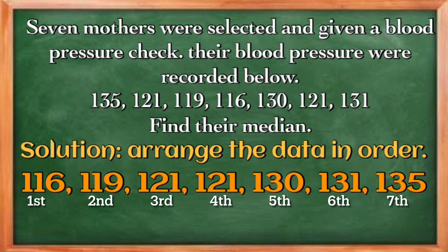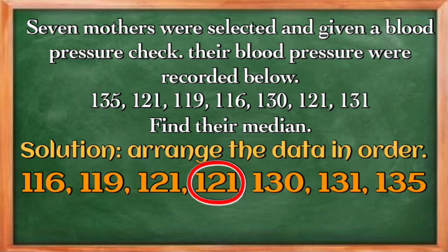That is why we need to follow rule number one. All we need to do is to identify the middle rank value. So if we have rank one to seven, the middle rank is four, and what corresponds to this rank we have 121. Therefore, the median of this data set is 121.